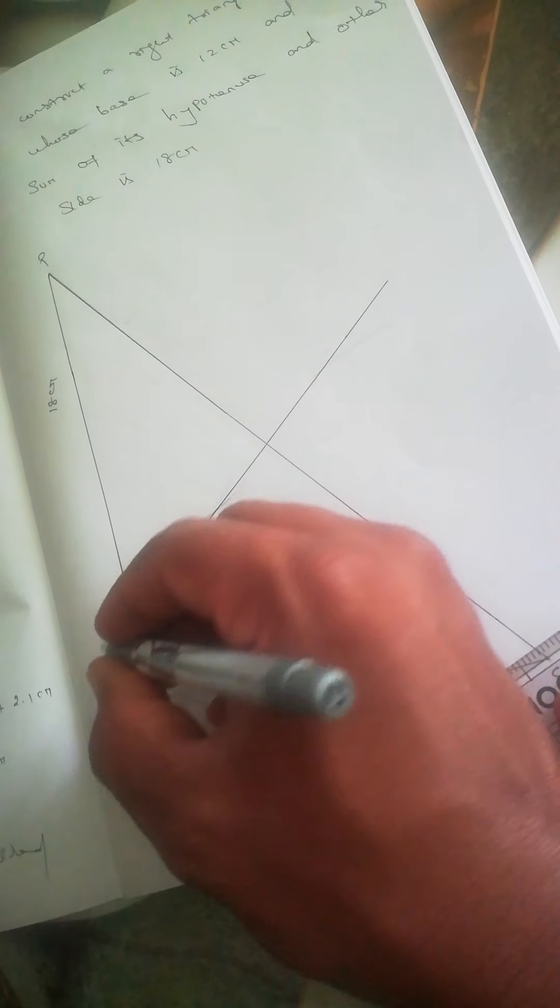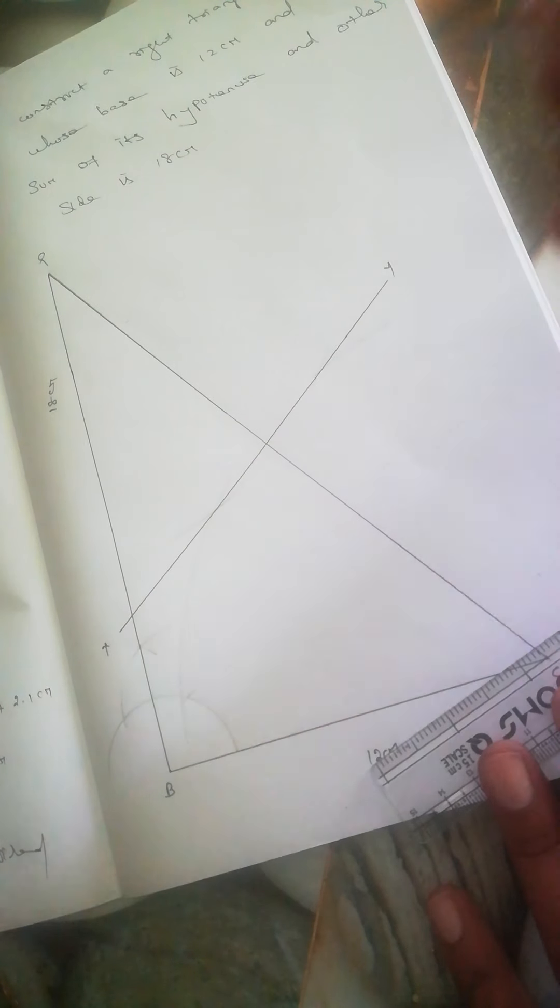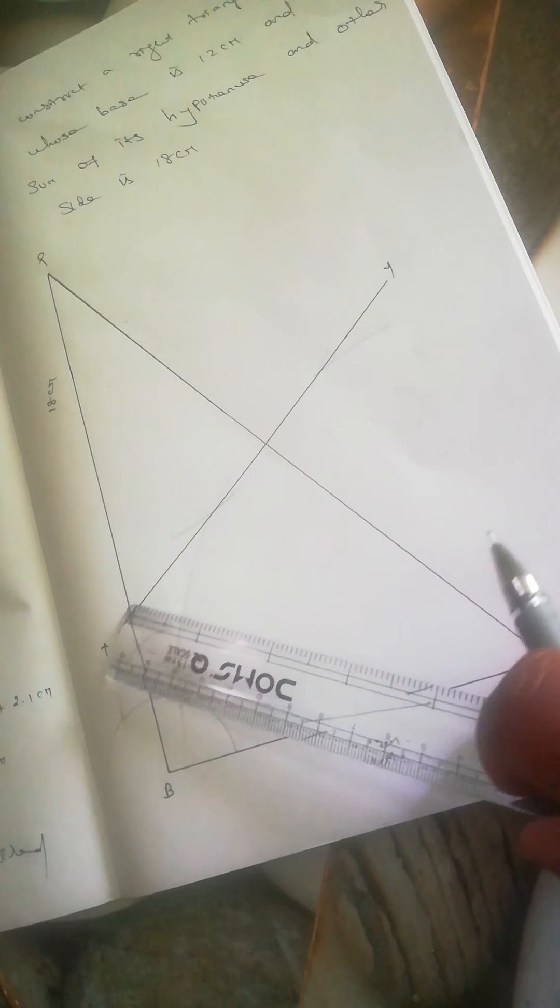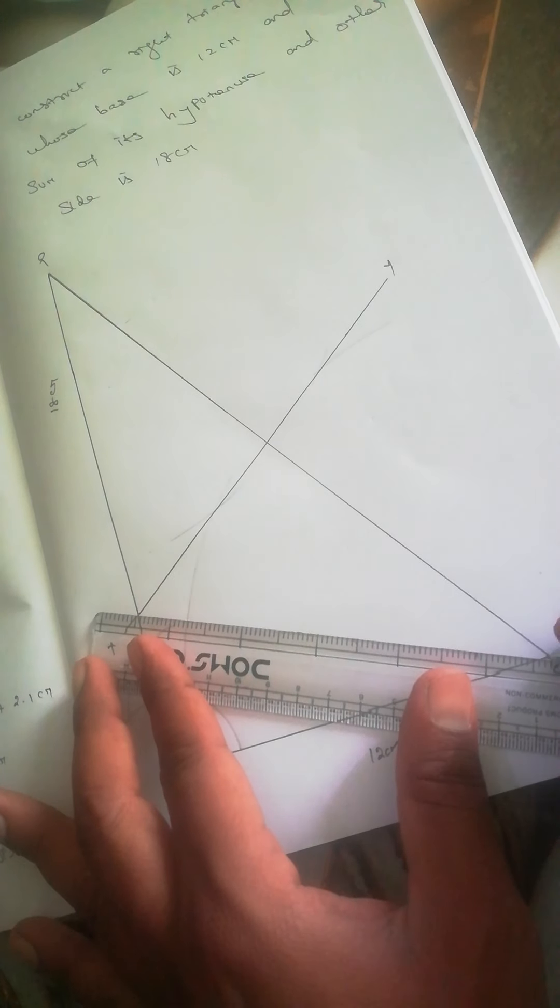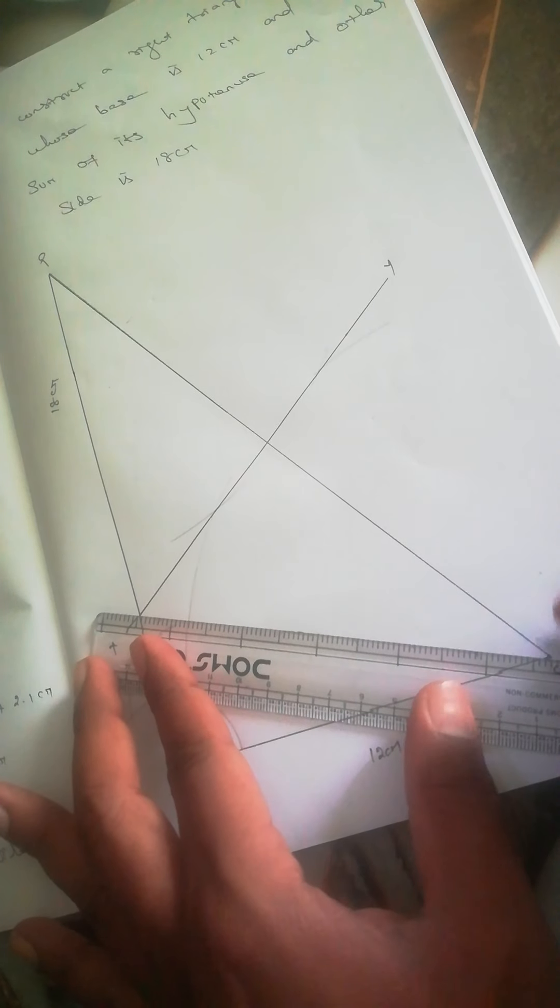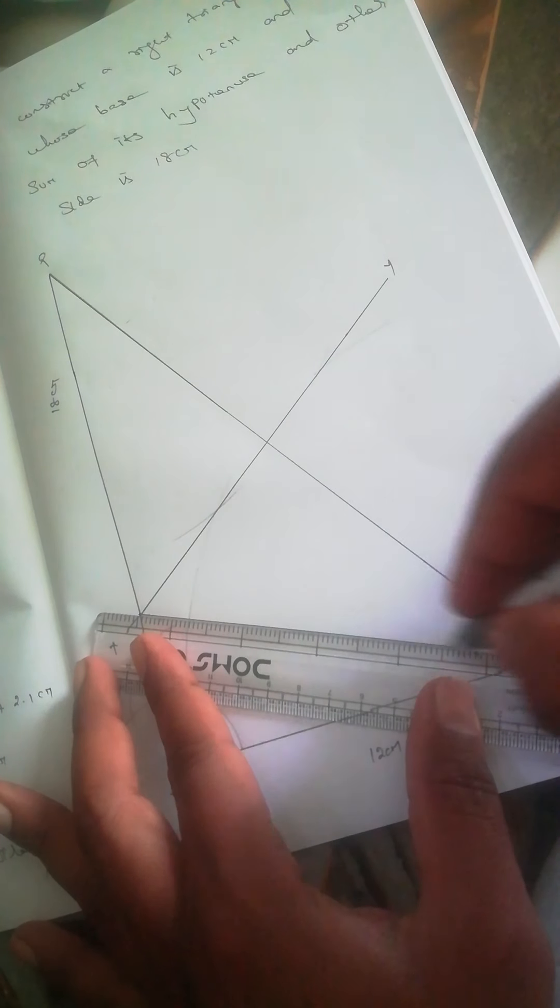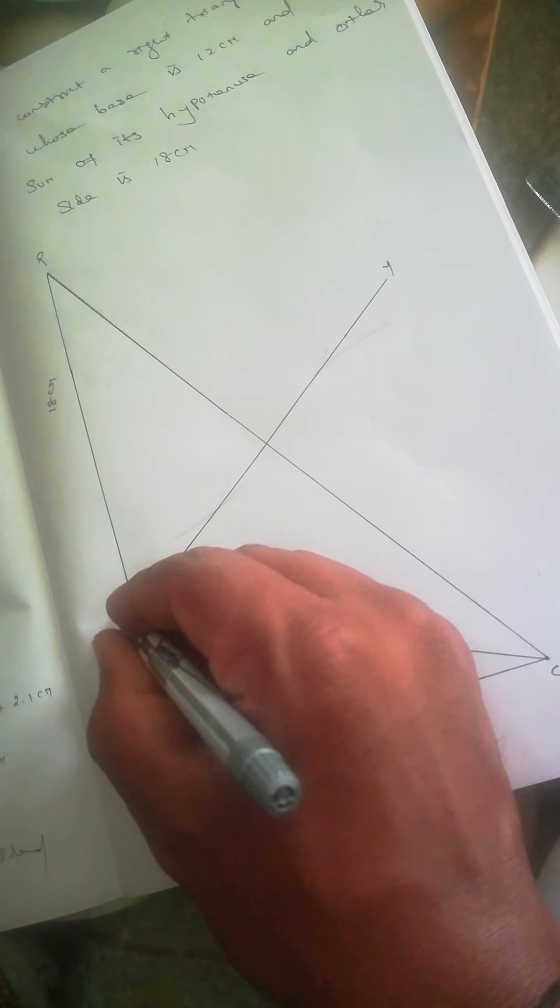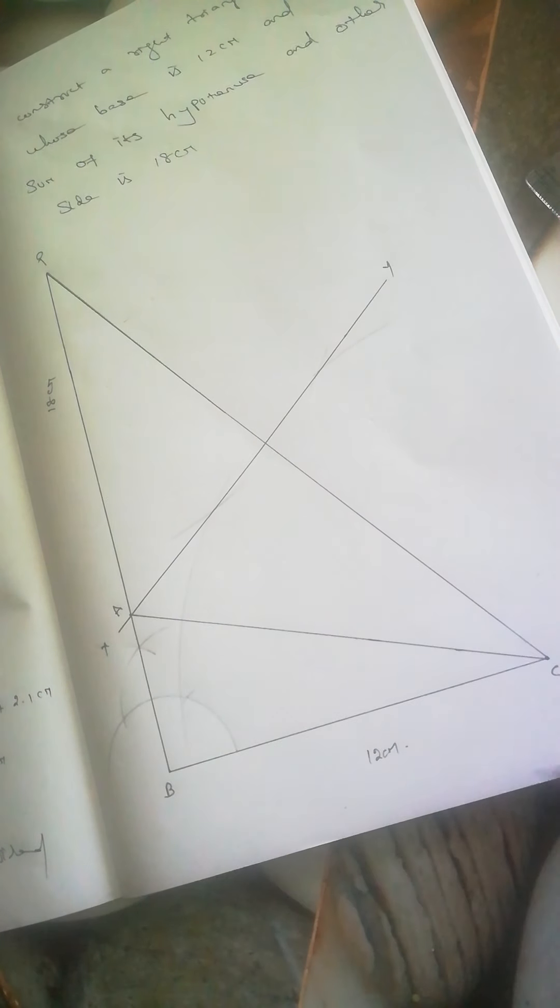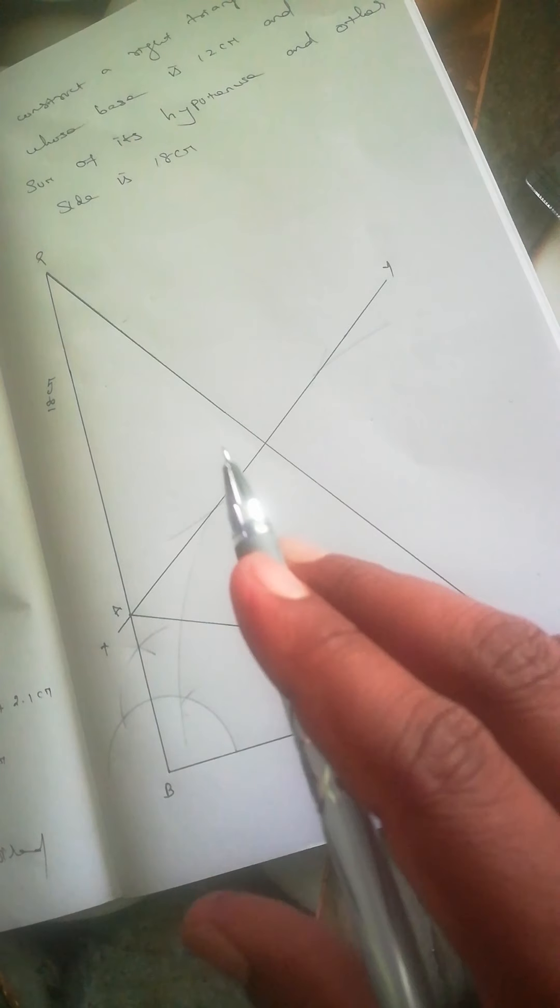Extend the perpendicular bisector to meet the opposite side. This gives us point A, forming triangle ABC. The sum of the hypotenuse and the other side should be 18 centimeters.